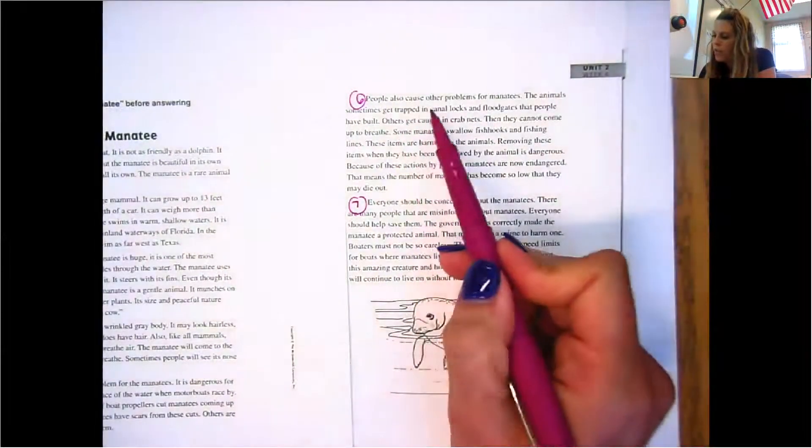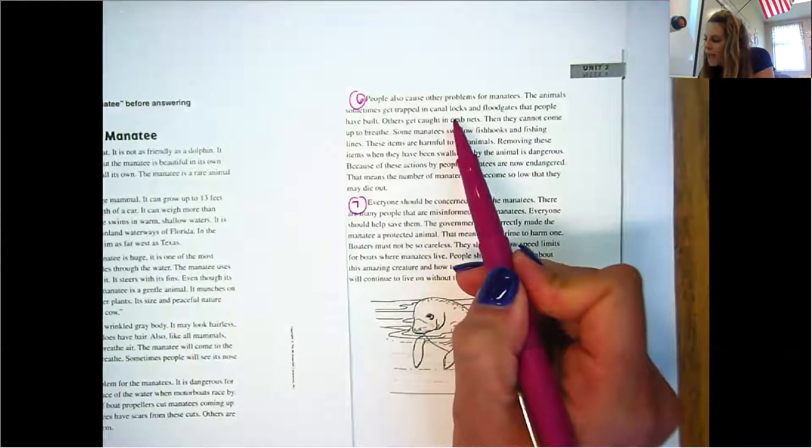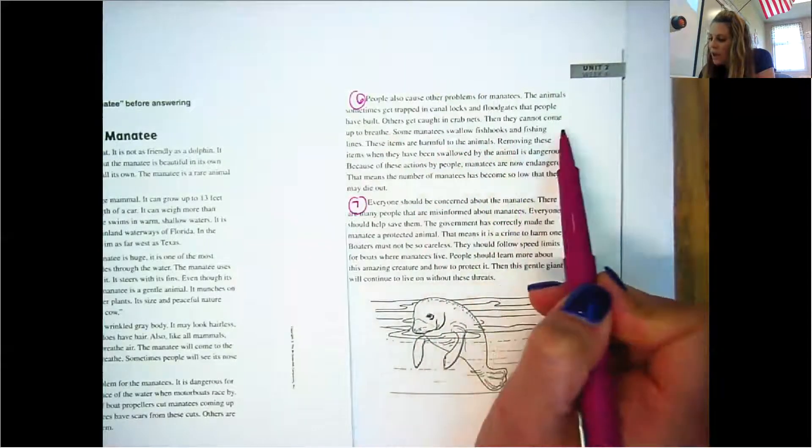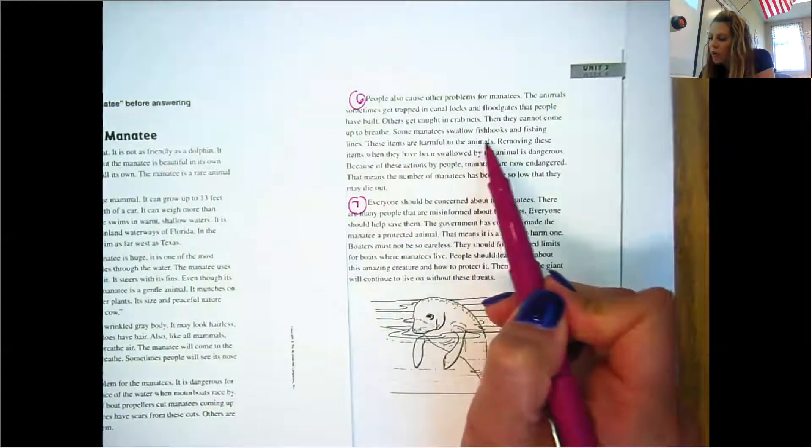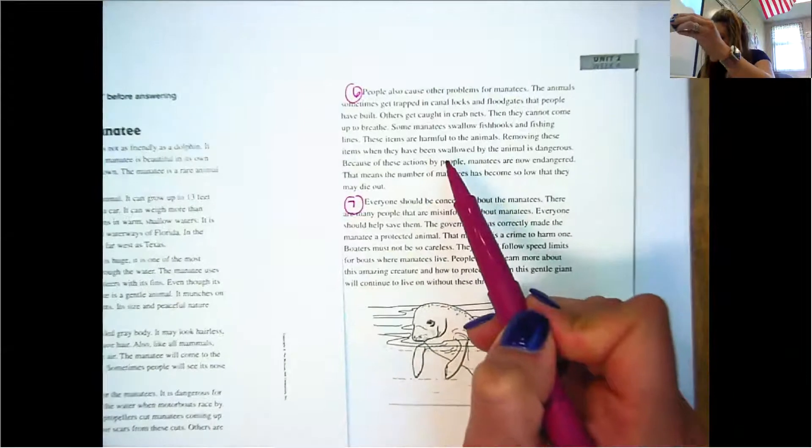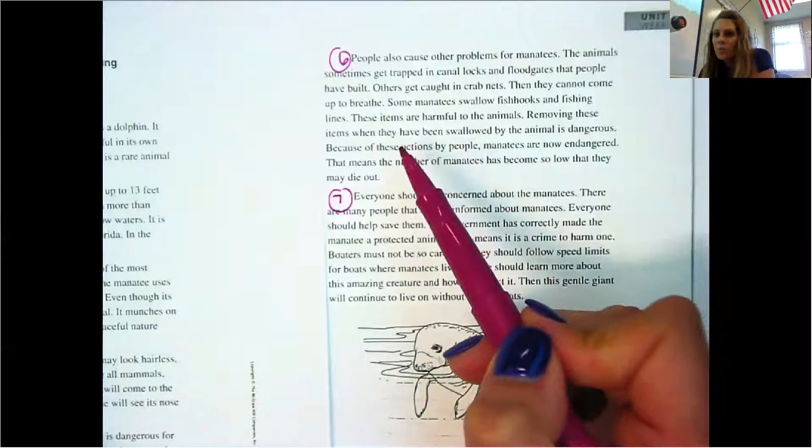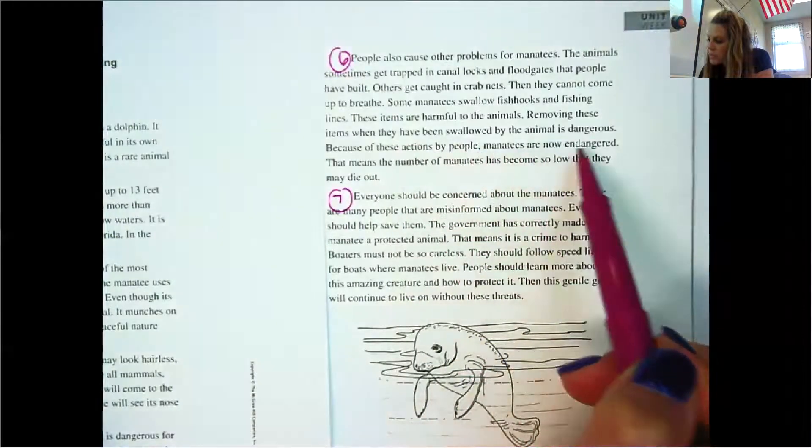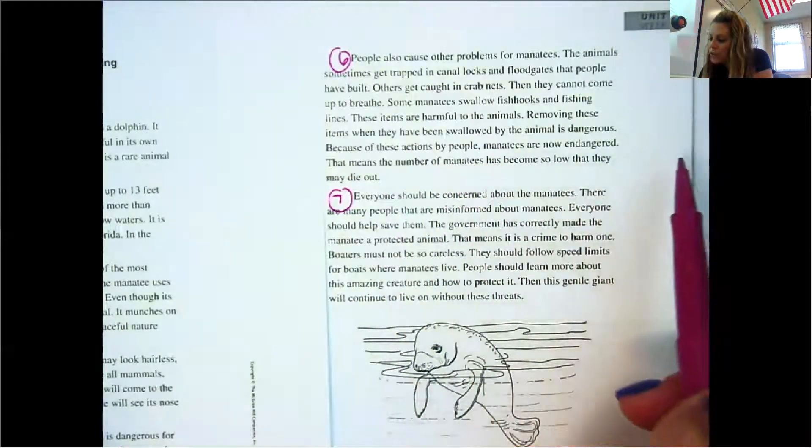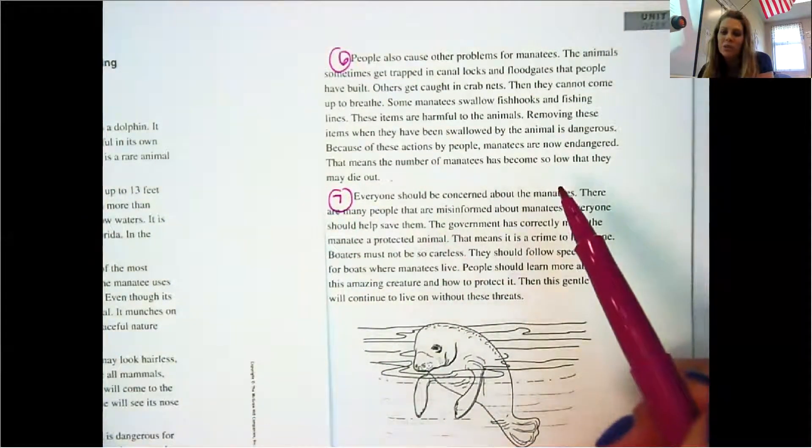People also cause other problems for manatees. The animals sometimes get trapped in canal locks and floodgates that people have built. Others get caught in crab nets. Then they cannot come up to breathe. Some manatees swallow fish hooks and fishing lines. The items are harmful to the animals. Removing these items when they have been swallowed by the animals is dangerous. Because of these actions by people, manatees are now endangered. That means the number of manatees have become so low they may die out.